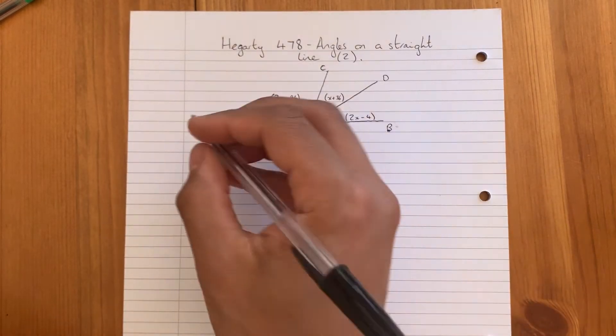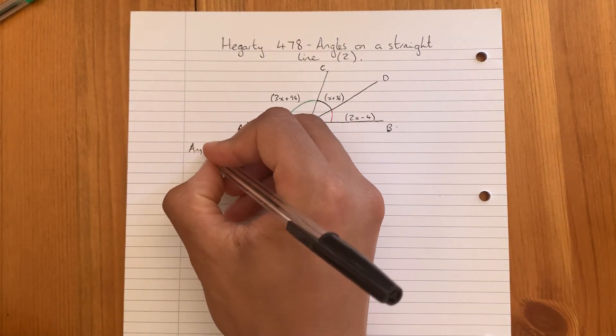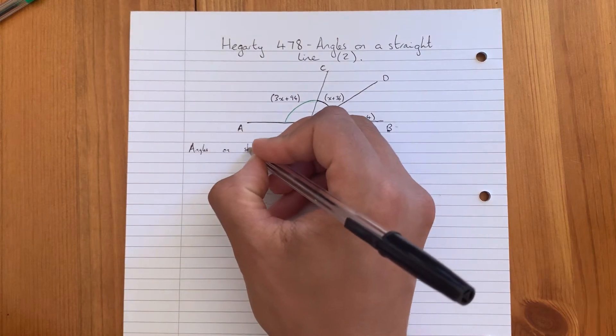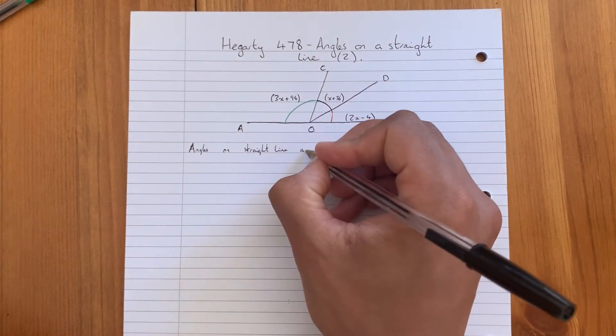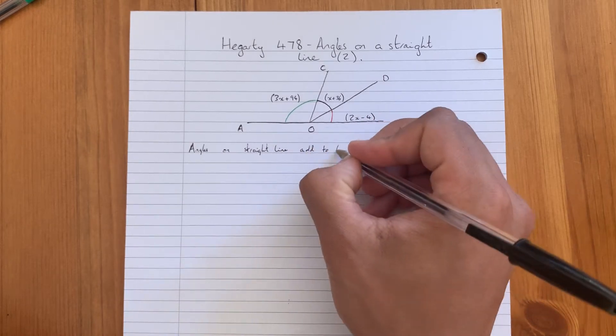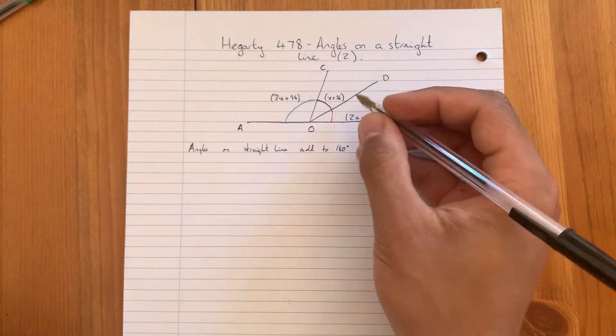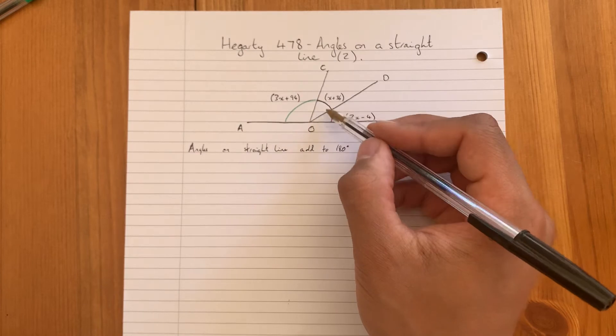add to 180. So that means this green angle plus this black angle plus this red angle is going to equal 180.